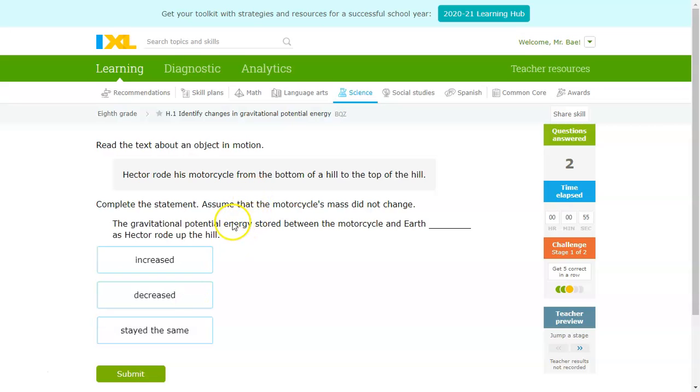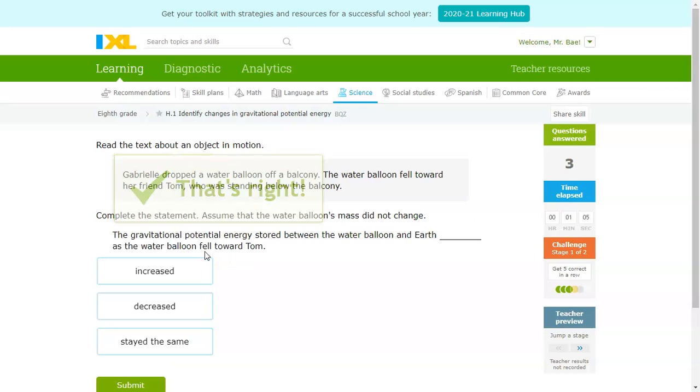Next one, gravitational potential energy stored between the motorcycle and Earth blank as Hector rolled up the hill. So, if it's going up the hill, the distance is increasing. So, increasing energy.